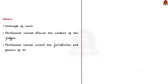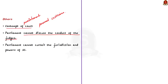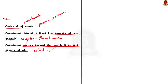Other provisions include that the actions and decisions of judges are immune from personal criticism. The judiciary has the power to penalize those found guilty of contempt of court, which is seen as effective protection against unfair criticism. Parliament cannot discuss the conduct of judges except when a removal proceeding is being carried out, giving the judiciary independence to adjudicate without fear. The parliament cannot curtail the jurisdiction and powers of the court, though it can extend the same. These are the provisions which ensure the independence of judiciary.